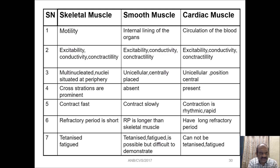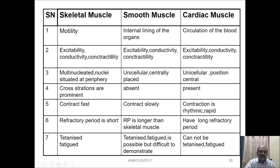Regarding the property of contractility: skeletal muscle can generate a rapid force of contraction compared to the other two. Smooth muscle produces a sustained type of contraction and contracts very slowly. Compared to these two, the property of cardiac muscle is very unique — its contraction is rhythmic and very rapid.